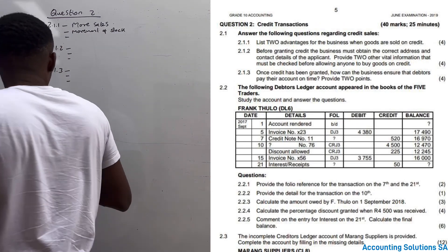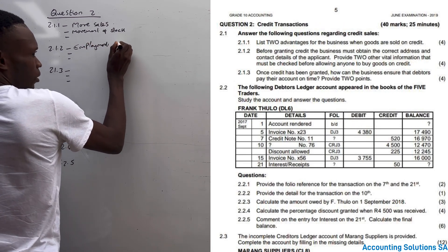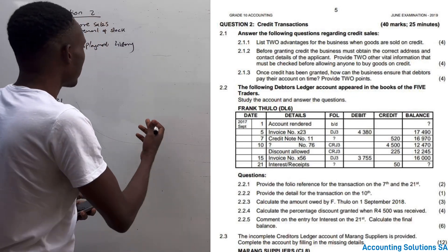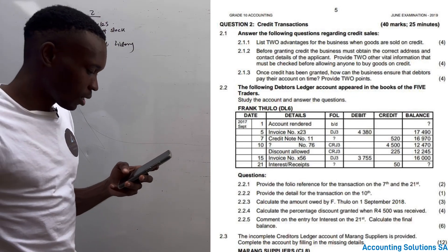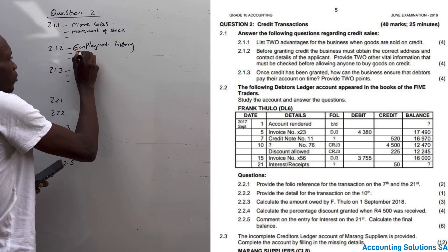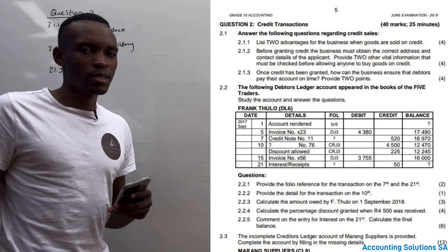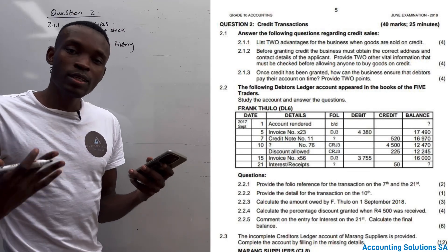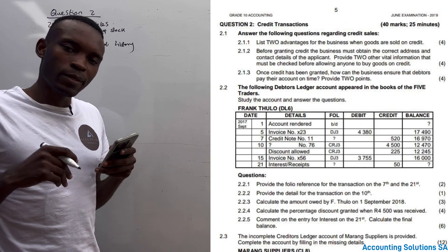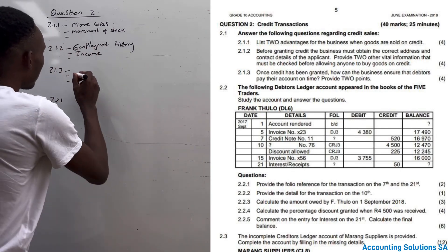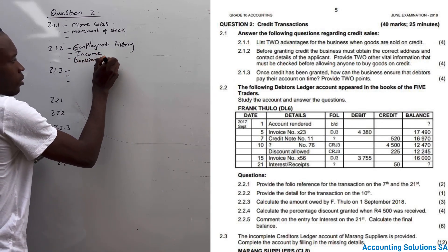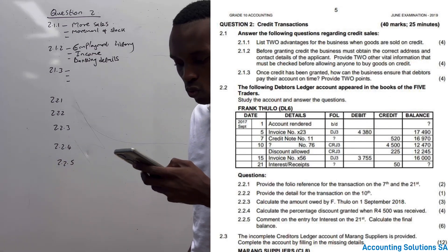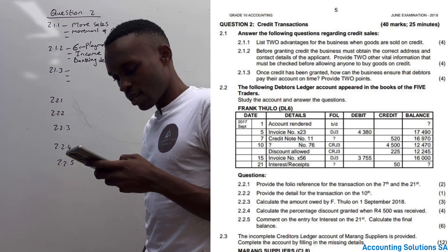Number one, we have to check employment history. We can't just sell to anybody — some people are not working, which means they won't be able to pay. Number two, we have to check the income of the person: does this person qualify for, say, a car if we are selling a car? We also need to check their credit history — does this person pay back what they borrow? And finally, check banking details and bank statements.